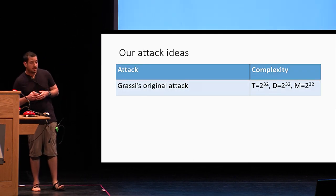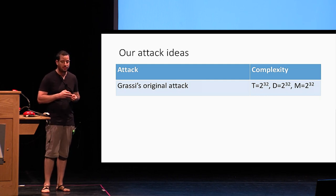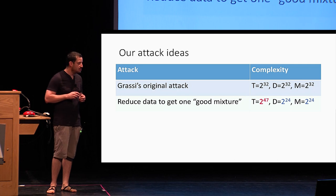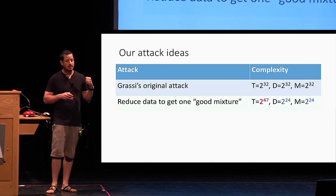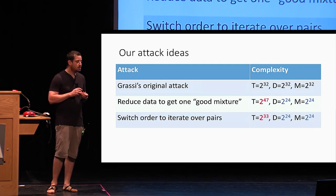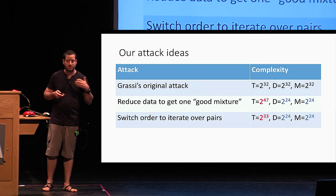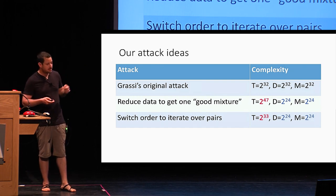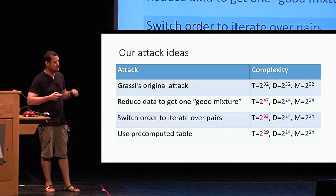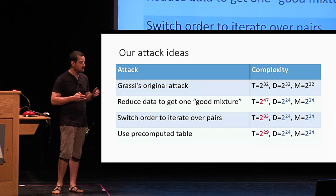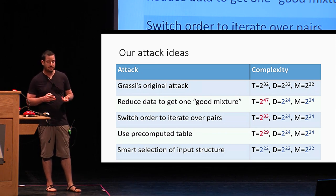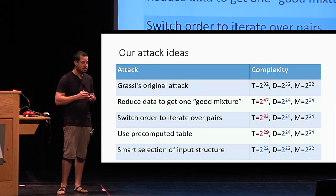This is a new type of attack but still has the same 2^32 complexity as before. We had several ideas to improve it. First, we can reduce the data needed but pay with extra time complexity — not really good. Then we switch the order of operations inside the attack algorithm, which helps reduce time complexity to 2^33 — still worse than previous attacks. Then, using small precomputed tables, we further improve to 2^29, already the best currently known attack. Finally, adding a smarter selection of the input structure allows us to reach 2^22 and improve by a factor of 1,000.